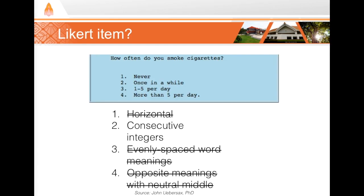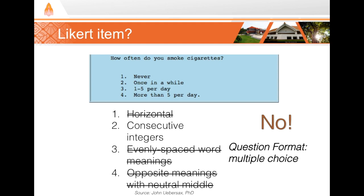What about this one: 'How often do you smoke cigarettes?' The choices are not arranged horizontally, but we could reformat that. The numbers are consecutive. However, the word meanings may not be evenly spaced — the difference between 'never' and 'once in a while' seems small, while the difference between 'once in a while' and 'one to five a day' is bigger. Also, 'never' is not the opposite of 'more than five per day,' and there's no neutral middle. So this is not a Likert item, nor a Likert-type item — just a multiple choice question generating categorical ordinal data.